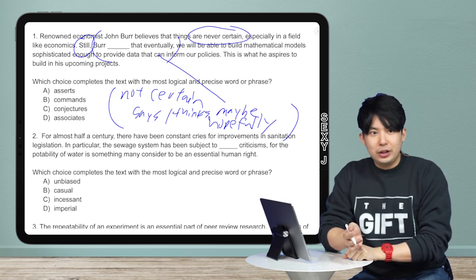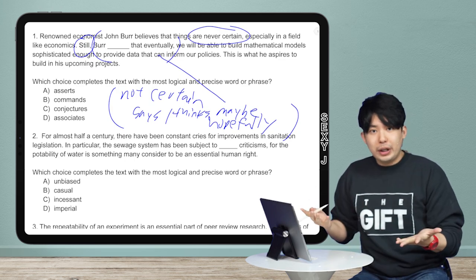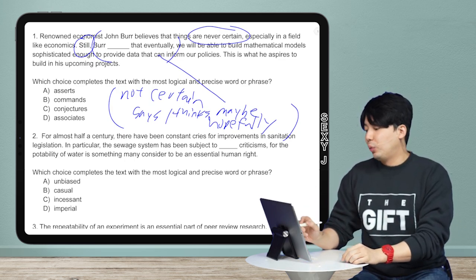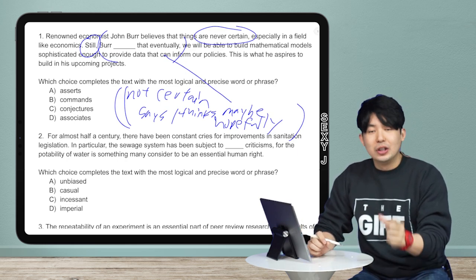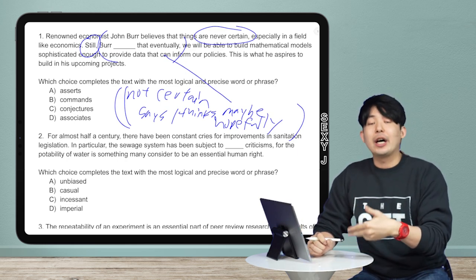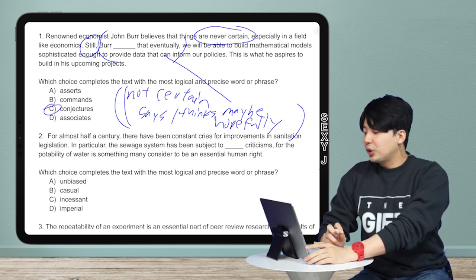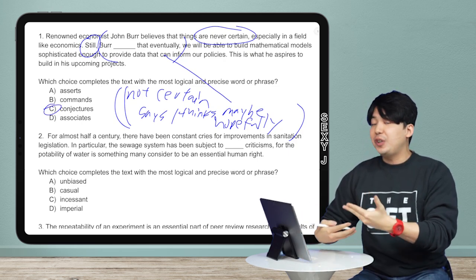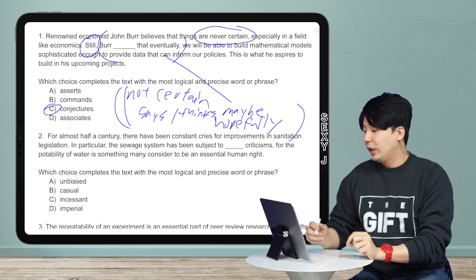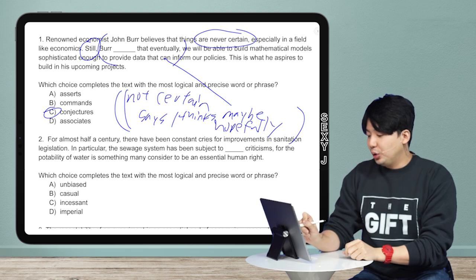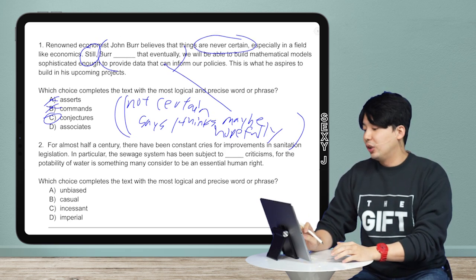So, what do I need? Things aren't certain, but he still thinks, hopefully, maybe, believes, right? That this could happen. So, what's a word that could be like? He hopes this could be the case. He thinks maybe this could be the case. So, what do I need? Something like he hypothesizes. Something like he theorizes. And what is that? Conjectures, okay? So, I want you guys to get more of a feel for these, right? And not super scientific, but more based on your linguistic instincts, okay? So, asserts, commands, those are both very definite. Those are not maybe at all. So, my answer here is conjectures, okay?